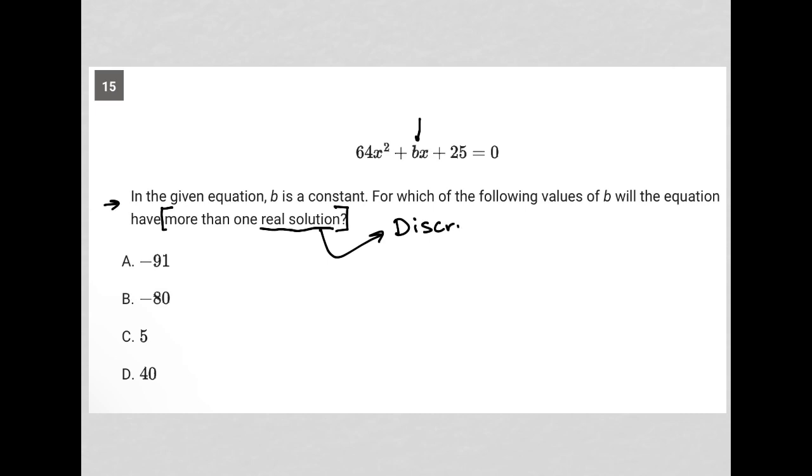discriminant. The discriminant is the part of the quadratic formula that is under the radical. It's the b squared minus 4ac. Now, how is this important? Well, it's really a shortcut to understanding the types of solutions you expect to have when you have a quadratic equation.